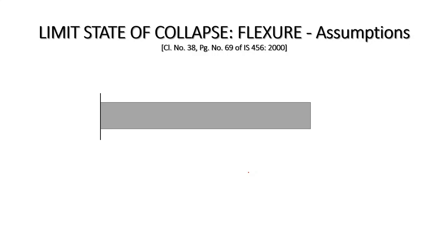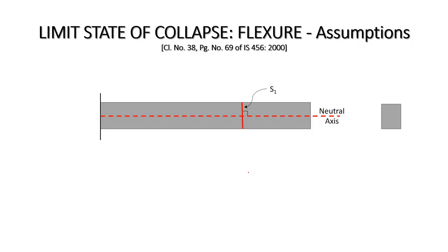Let us consider a cantilever beam. If this is the neutral axis and we take a section at any interval which is normal to the neutral axis, then the section will be a plane section before bending because there is no external load on this beam. So this beam is not bent, and whatever section you obtain will be a plane section — it will not be a distorted section.